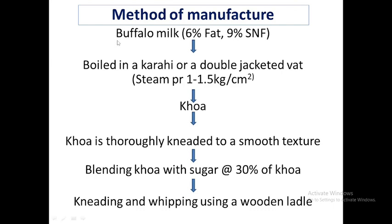For burfi, we will be taking buffalo milk containing ideally six percent fat and nine percent SNF. Then it is boiled — usually the steam pressure kept is 1 to 1.5 kg per centimeter square, or it is done in an open pan. We get khoa out of it. Usually this khoa is blended with 30 percent sugar — sugar is added at 30 percent — and then we mix it and knead it.